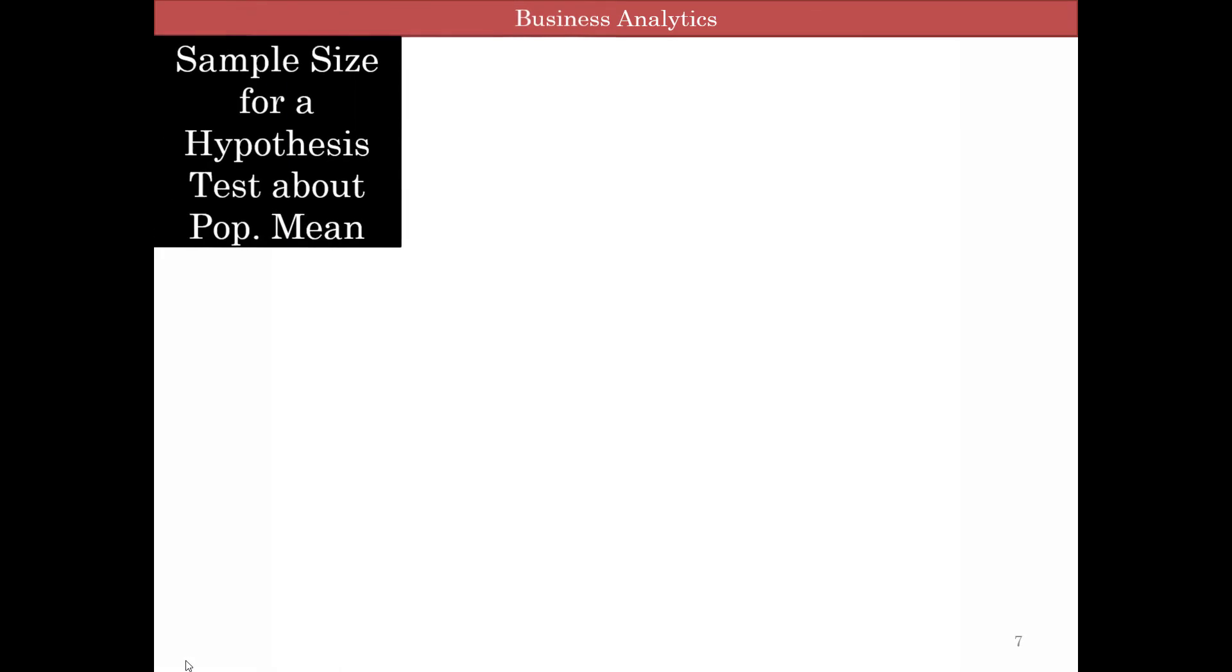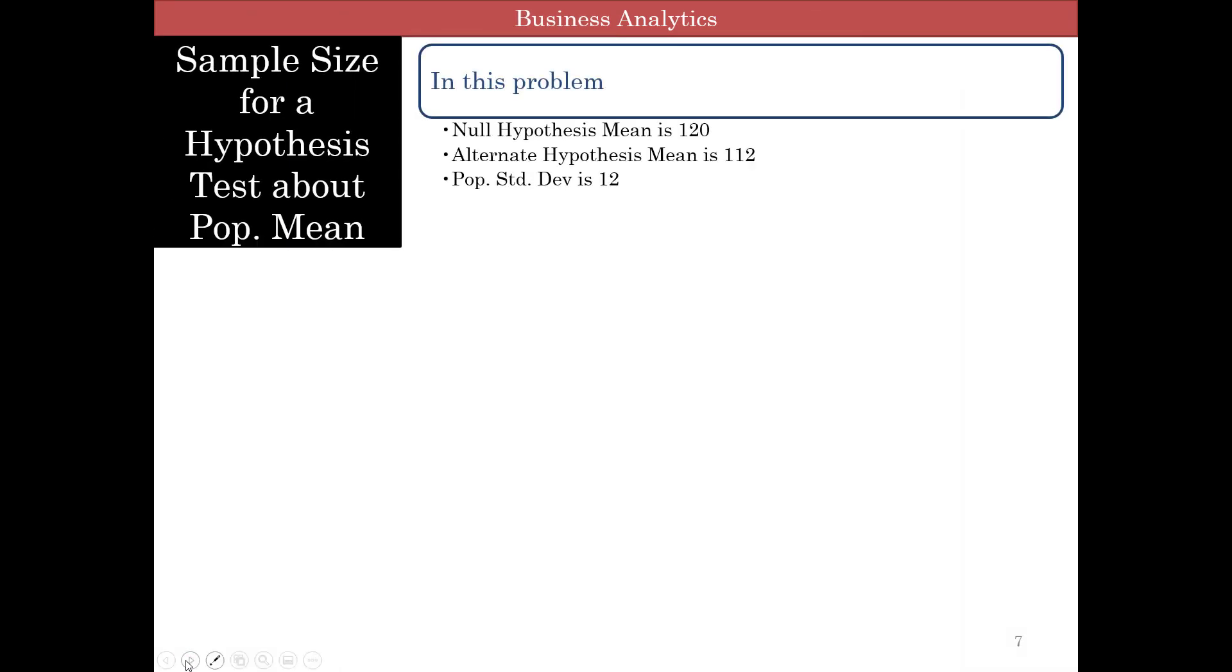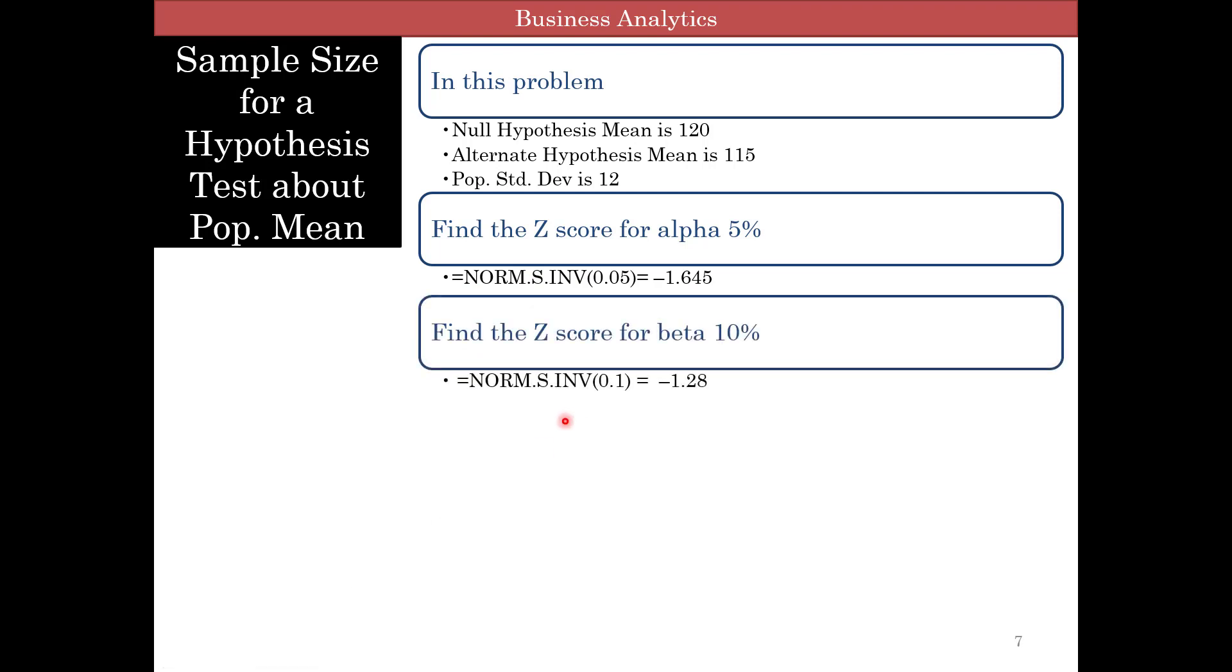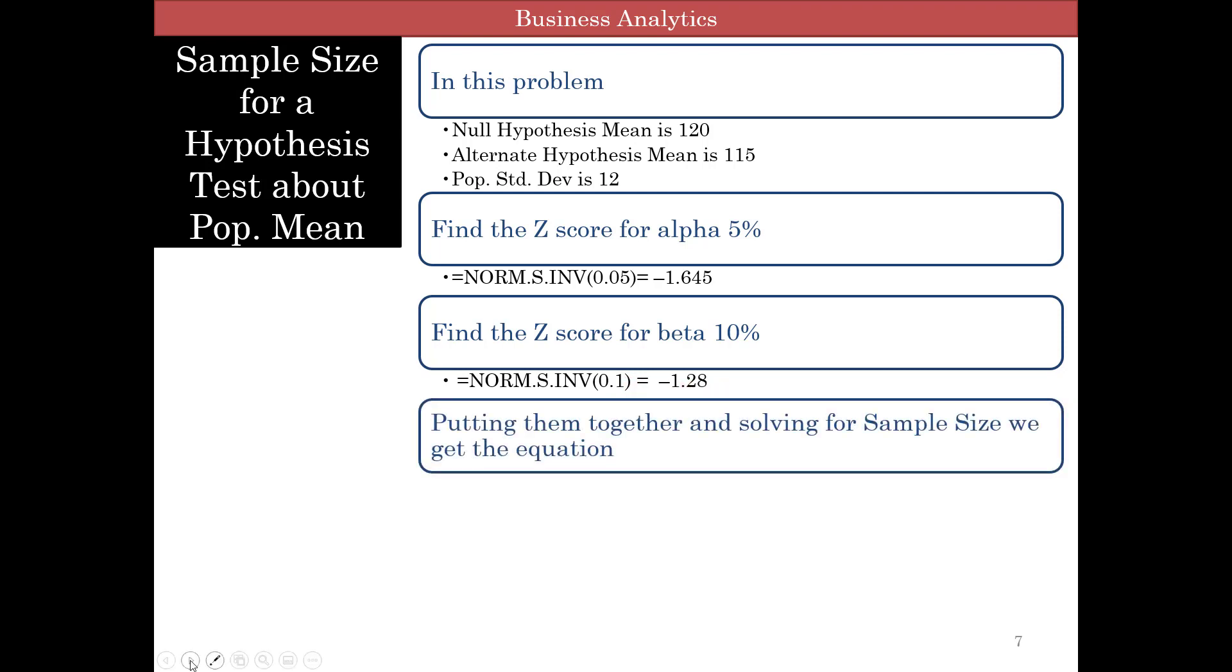In this problem, the null hypothesis is 120, alternate hypothesis mean is 115, population standard deviation is 12. We find the z-score for alpha 5% using NORM.S.INV and get negative 1.645. For beta 10%, we get negative 1.28.